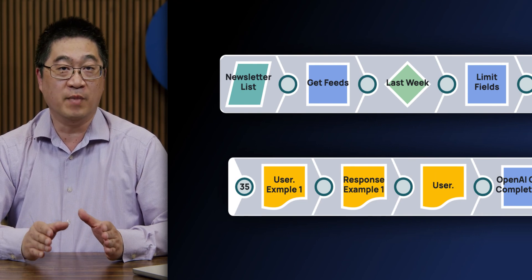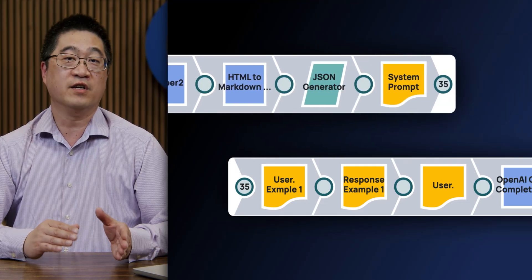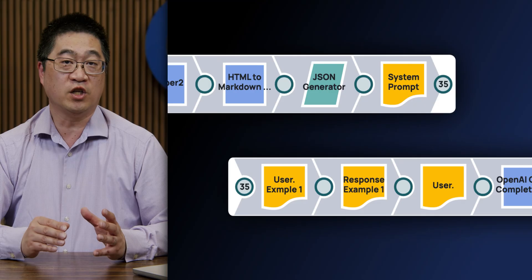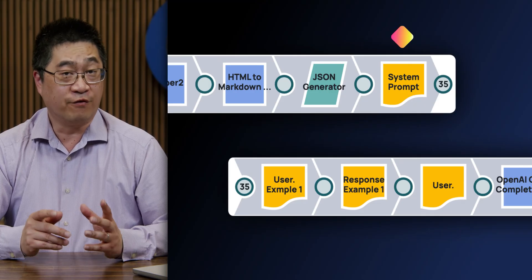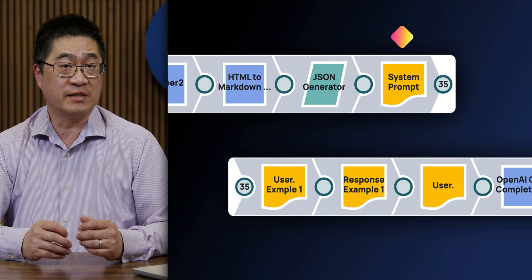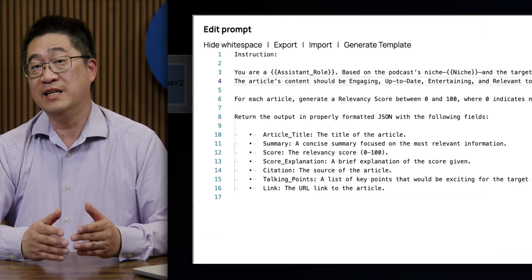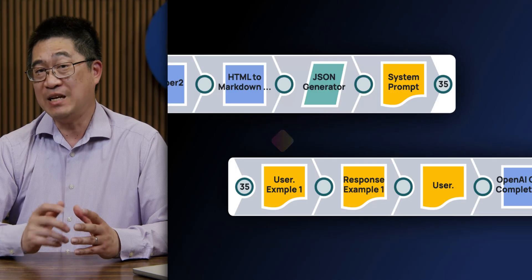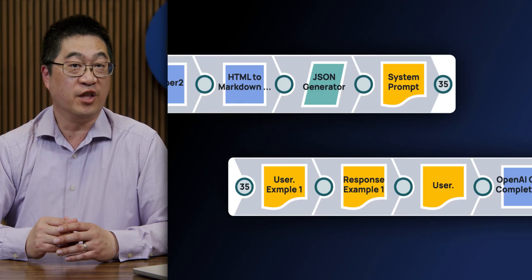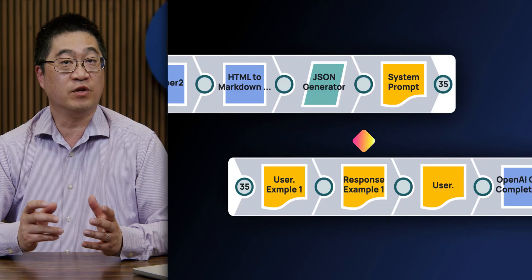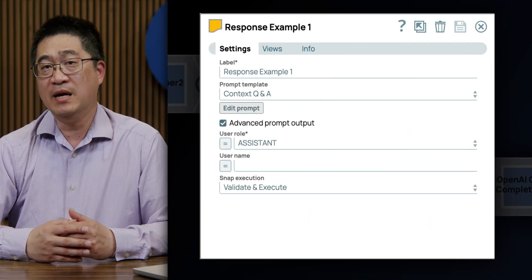Further down the pipeline, we have various system prompts that provide instructions to the LLM on what to do. The first one gives an overall explanation of the goal and what we want as outputs. The second one is an example newsfeed. The third is a response example that provides the LLM a sample of the formatting and summary information we want from each article.